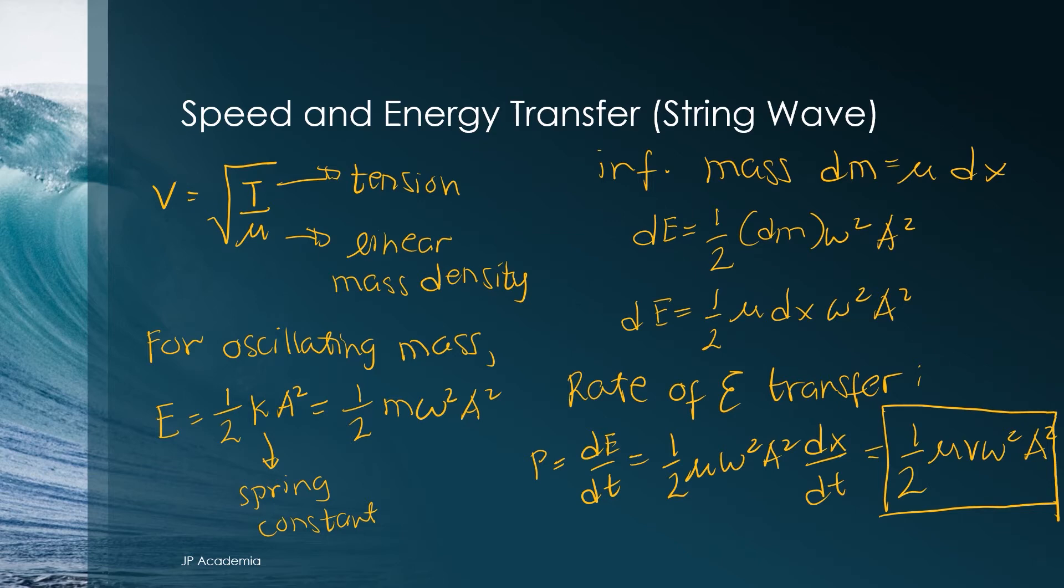Therefore, if we want to get the rate of energy transfer, what we need to do is to get the time derivative of this d e and we will have this final form which is equal to one half mu v the wave velocity or wave speed omega squared a squared.